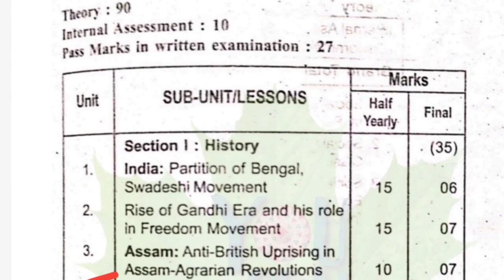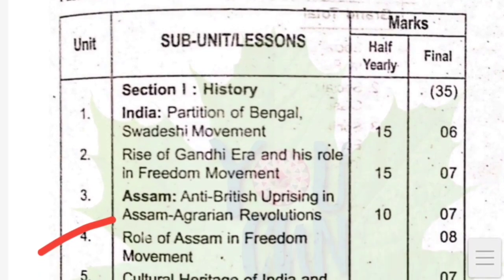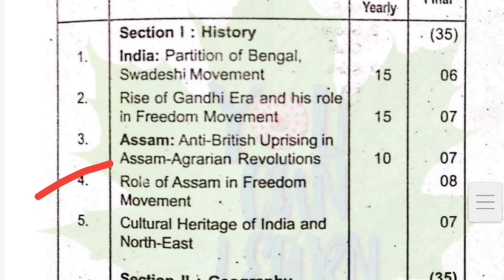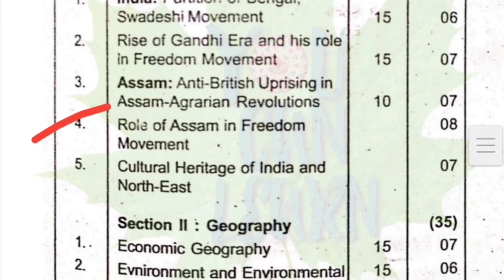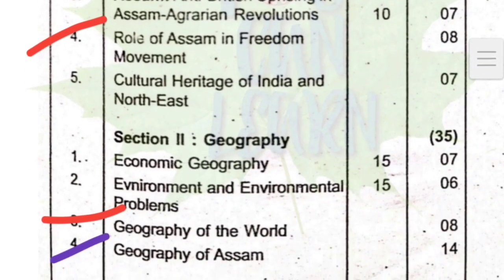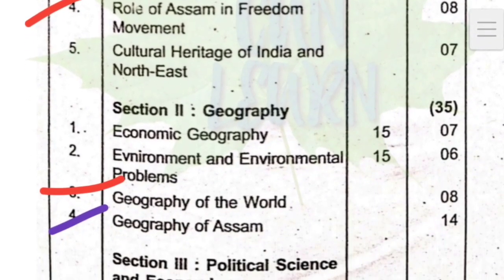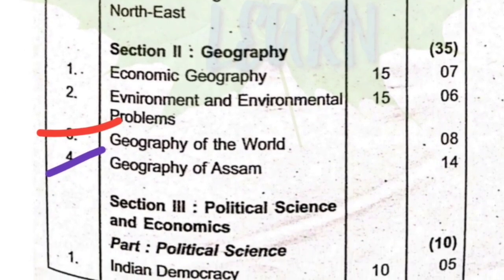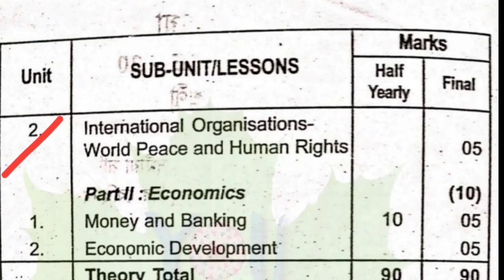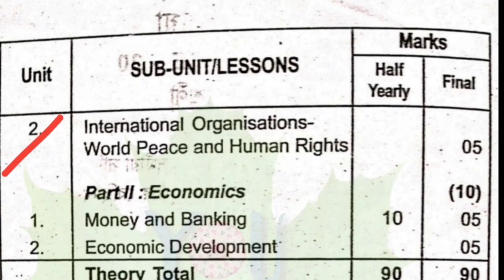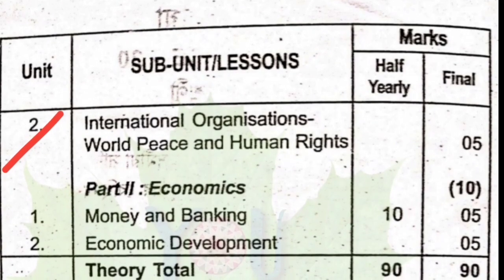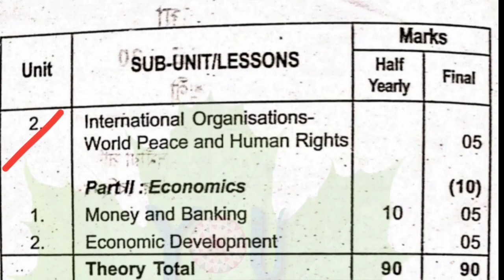This is the Social Science syllabus, which includes the Role of Assam in the Freedom Movement. Next is the Geography of the World, which includes the Geography of Assam. Next is International Organizations, World Peace and Human Rights.